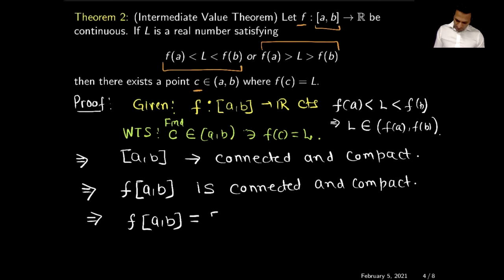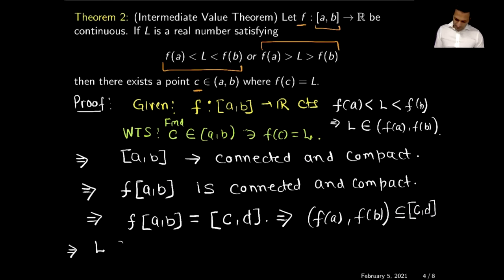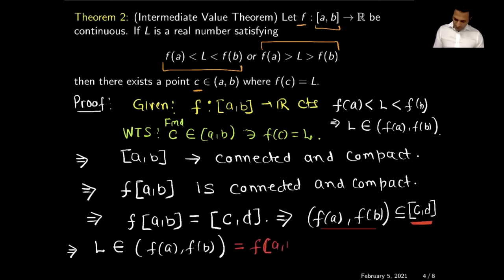A set that is connected and compact must be an interval, so f([a, b]) equals some interval [c, d]. Since f(a) is strictly less than f(b), the interval (f(a), f(b)) is contained in [c, d], which equals f([a, b]). Since l belongs to (f(a), f(b)) and this interval is contained in f([a, b]), l belongs to the range of f over [a, b].